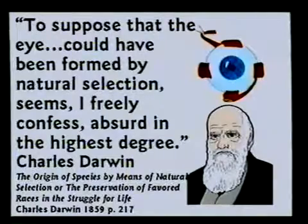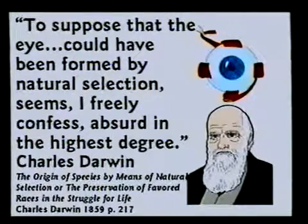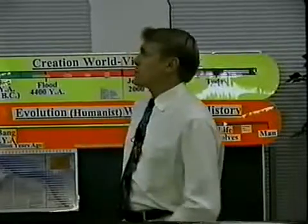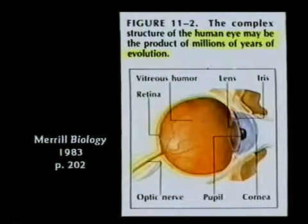Charles Darwin said in his book: 'To suppose that the eye could have been formed by natural selection seems, I freely confess, absurd.' Even Darwin recognized this was a crazy idea because the eyeball is so complicated — design demands a designer. Darwin said the eyeball confused him more than anything and he thought it might be the undoing of his theory. But this textbook says the complex structure of the human eye may be the product of millions of years of evolution.